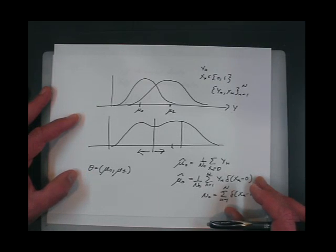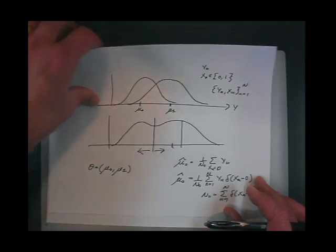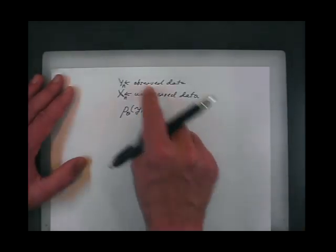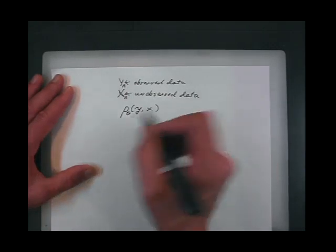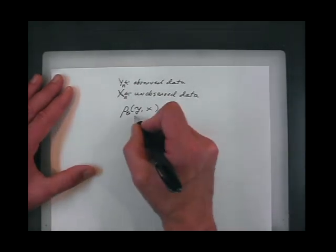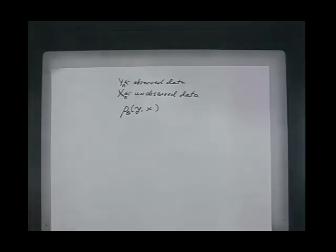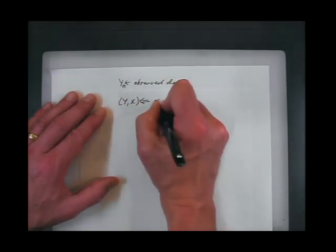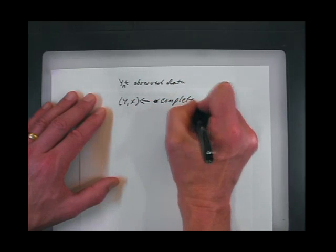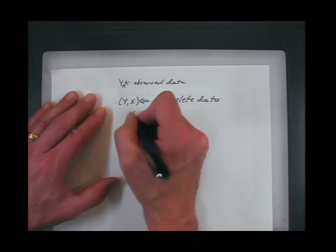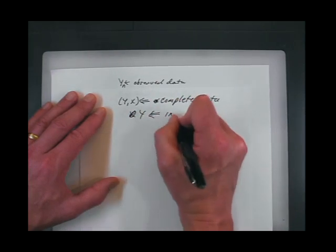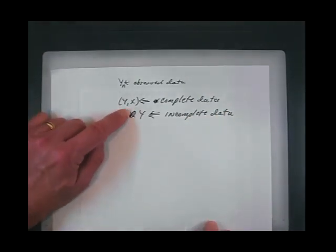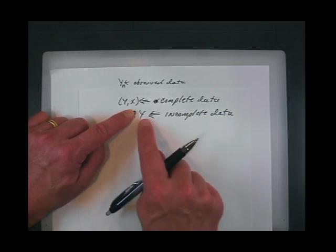This is the unobserved data and this is the observed data. Together, Y and X — this is the complete data. X alone — this is the incomplete data. Y and X together are complete because if you have both, the problem is easy. If you have just Y by itself, the problem is hard. You might say it's impossible — we're missing labels. But it's not impossible.